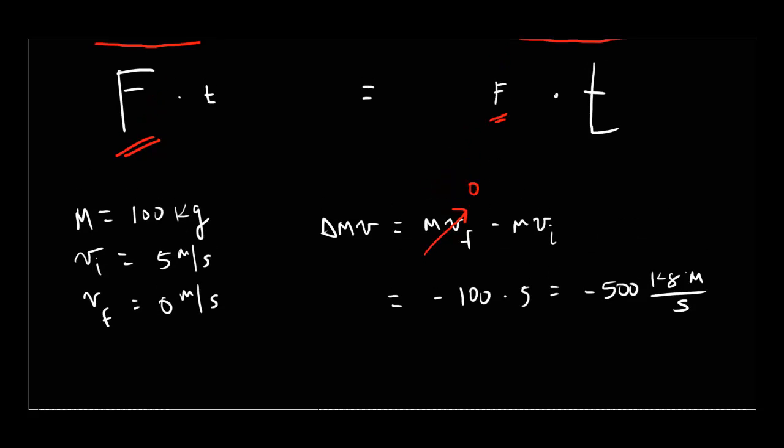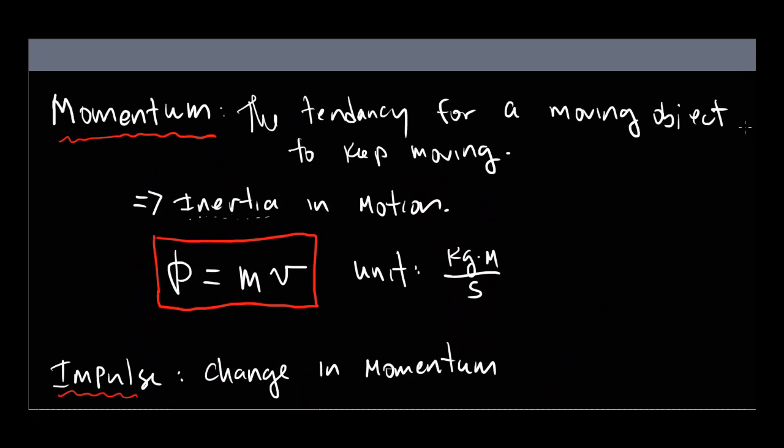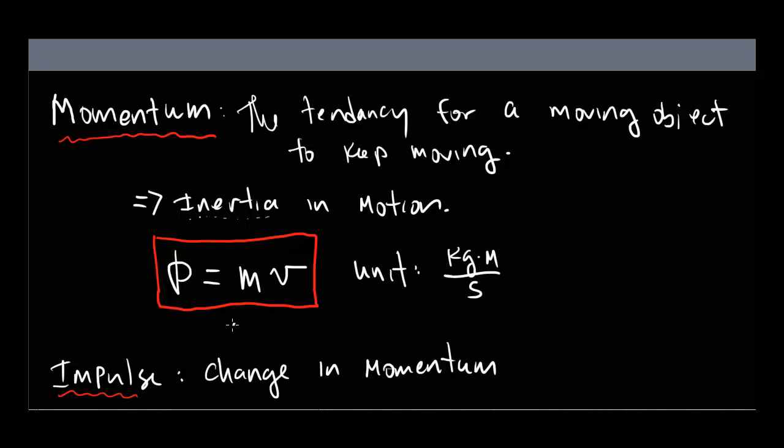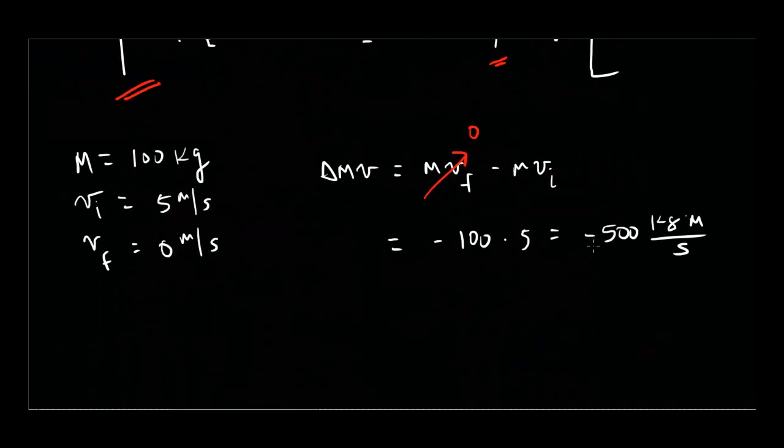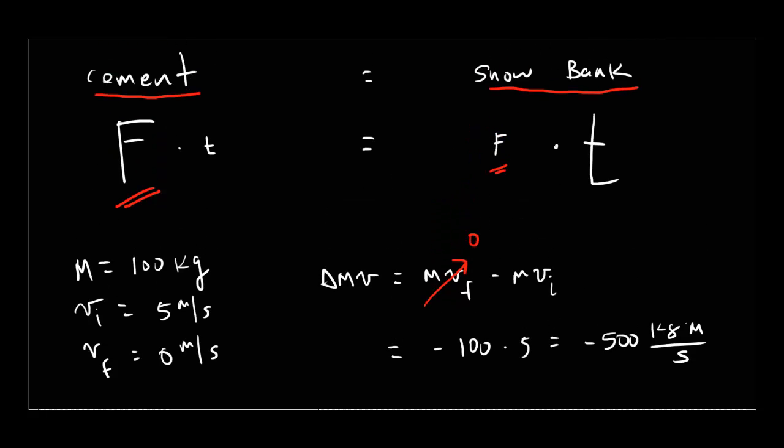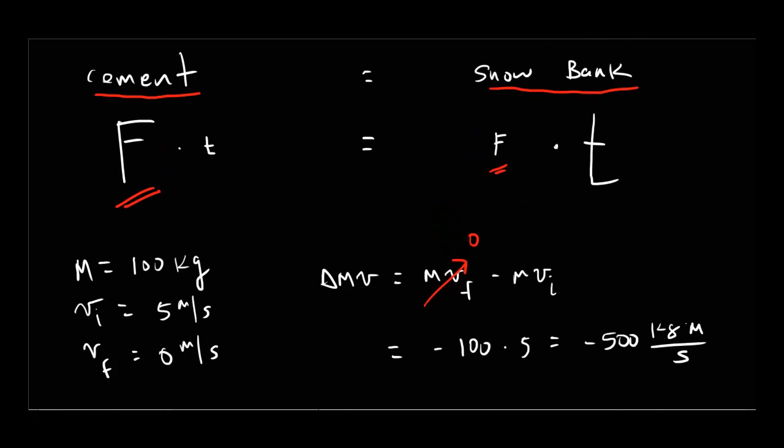This is a good time, I should have mentioned this earlier. This momentum is a vector. This is a vector quantity. Direction matters. We've gotten away from vectors. When we were doing energy we had a lot of scalars, but this is a vector. Velocity is a vector, so momentum is a vector. So this negative here, I'm including that negative to indicate that my momentum here, what's happening to my momentum, my momentum is decreasing. So this is negative 500 kilogram meters per second. So regardless of whether or not I hit the snow bank or the cement, that's my change in momentum.